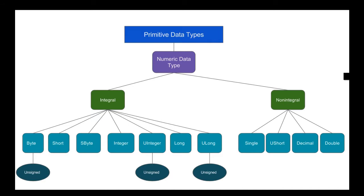Unsigned data types such as Byte, UInteger, and ULong do not hold negative numbers. The other types — those that are not unsigned — are signed and therefore hold negative numbers. That is the only difference between unsigned and signed numeric data types.